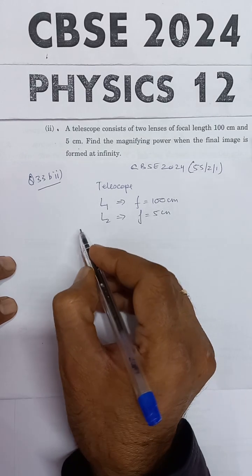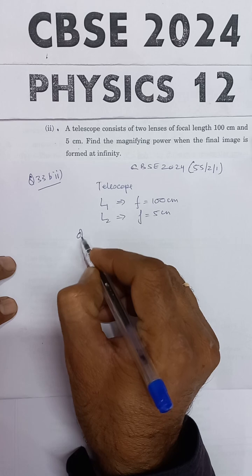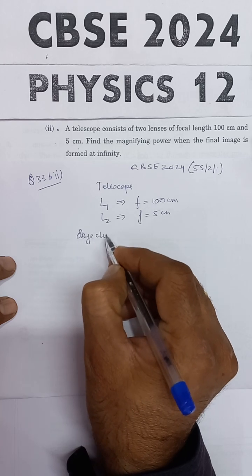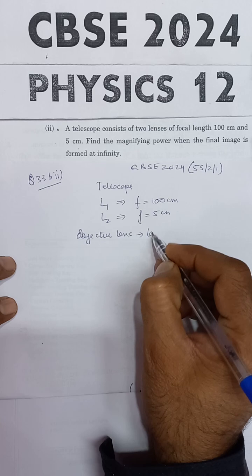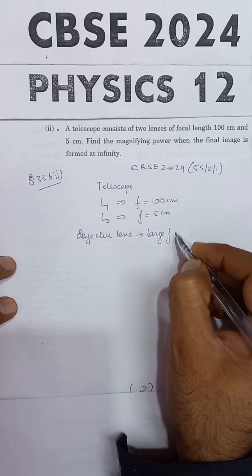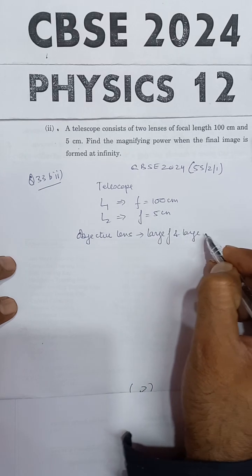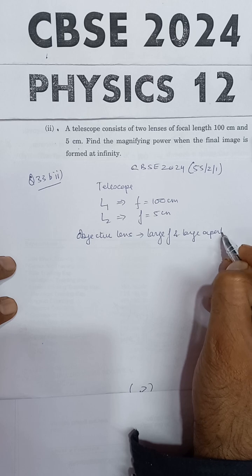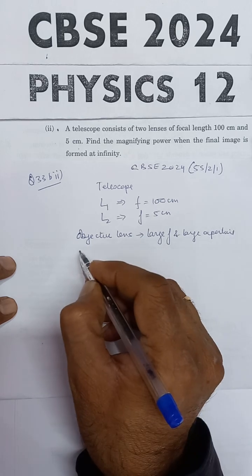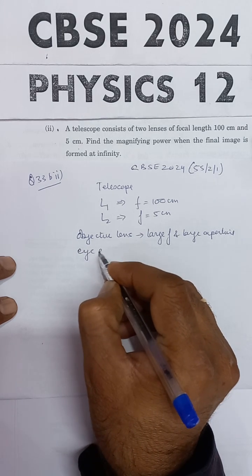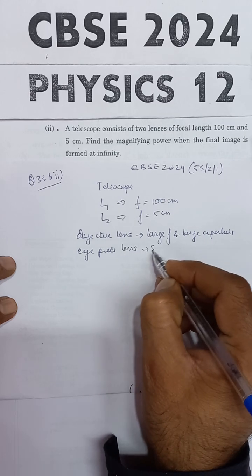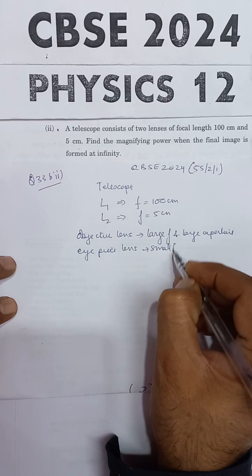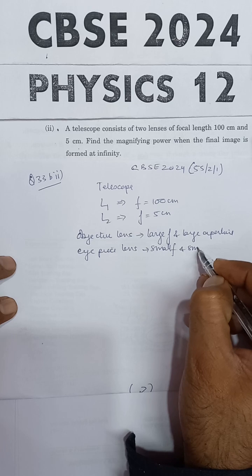So we should know this fact that the objective lens of a telescope has large focal length and large aperture, and the eyepiece lens is having small focal length and small aperture.